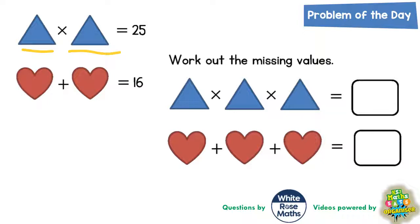So we're looking for a number times by itself to give 25. So 1 times 1 is 1, 2 times 2 is 4, 3 times 3 is 9, 4 times 4 is 16, and 5 times 5 is 25. So we're trying to make 25, therefore the triangles must be 5 each.